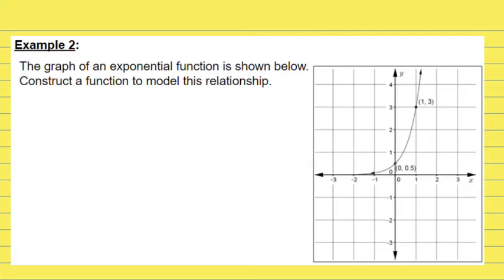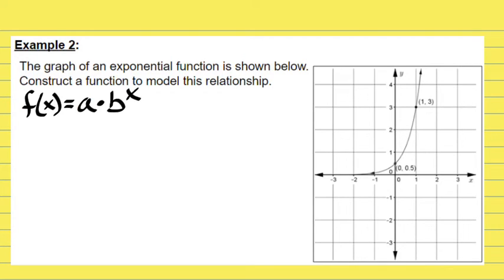Another example: the graph of a function is shown — construct a function to model this relationship. This is a good example because you're going to solve for the common ratio B in a slightly different way. The standard form for an exponential function is A times B to the power of X. A is going to be your y-intercept, which we can see right there at 0.05.